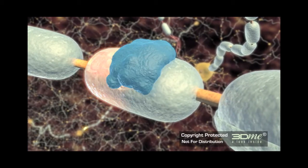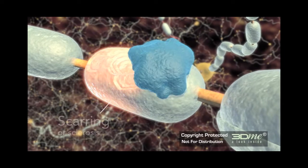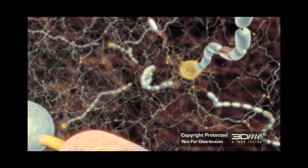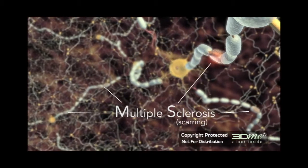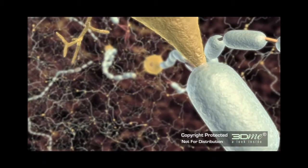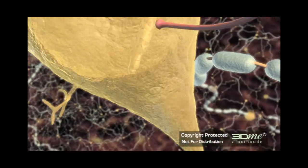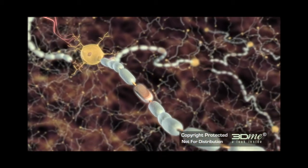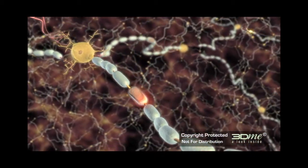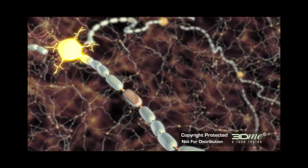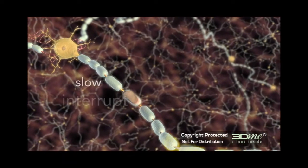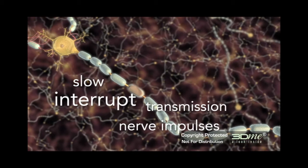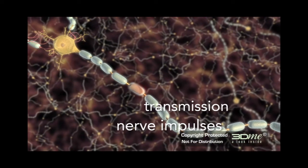The attacks on myelin produce scarring or sclerosis at multiple sites in the CNS, and it is these two factors that give the disease its name. These scars, in turn, begin to slow or interrupt the transmission of nerve impulses, resulting in the symptoms of MS.